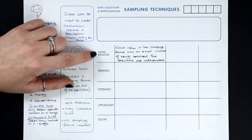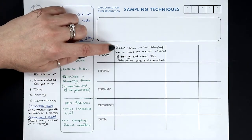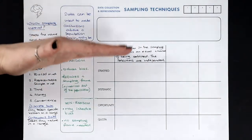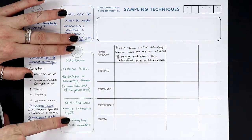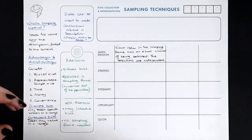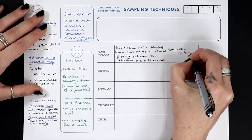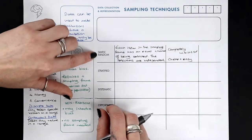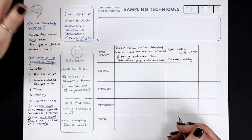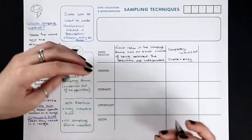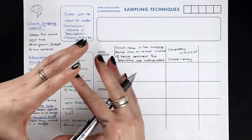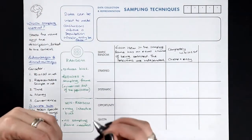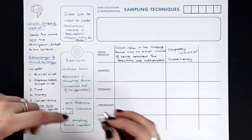Two important features of a simple random sample: each item in the sampling frame has an equal chance of being selected, reducing bias. Selections are also independent — choosing one person doesn't affect the chances of any other. It's completely unbiased and cheap and easy. However, if your population is spread over a large area, finding those sampled people could be difficult, costly, and inconvenient.